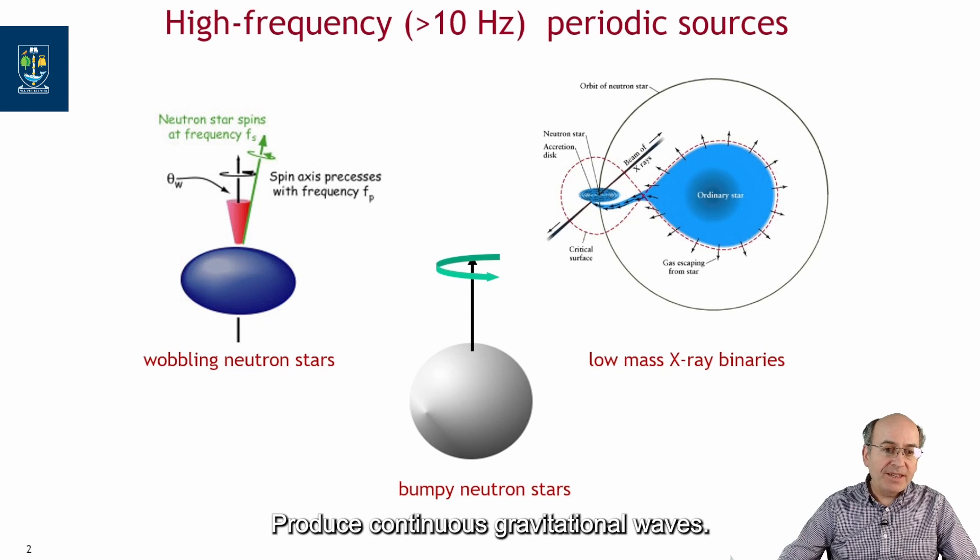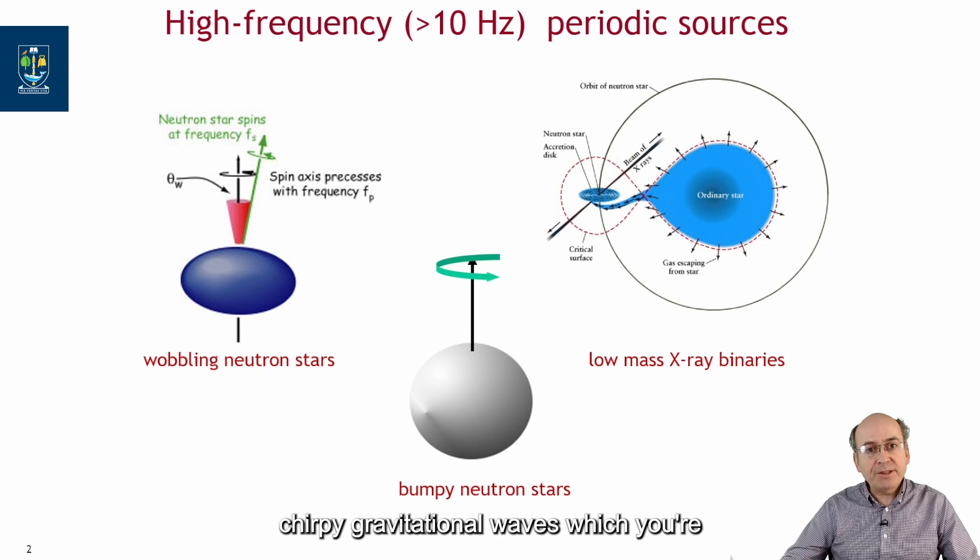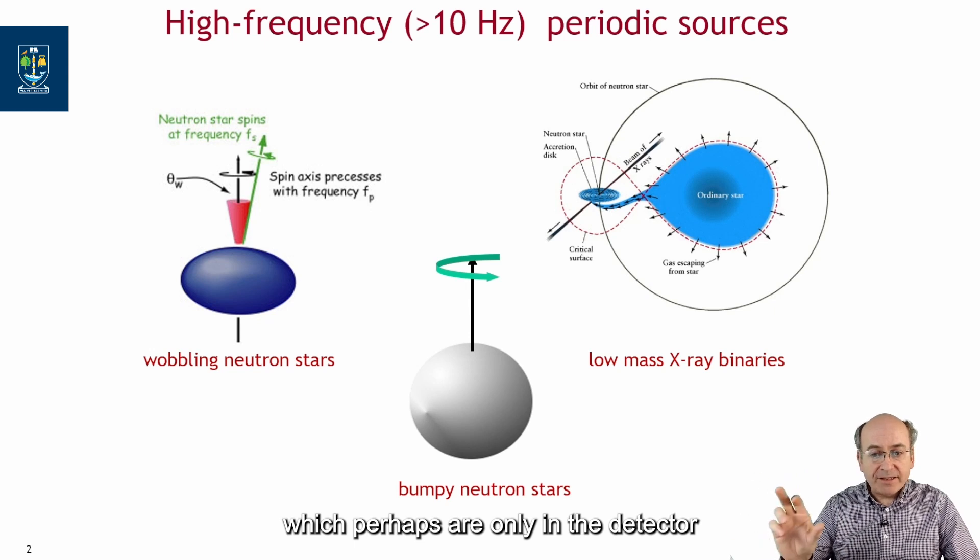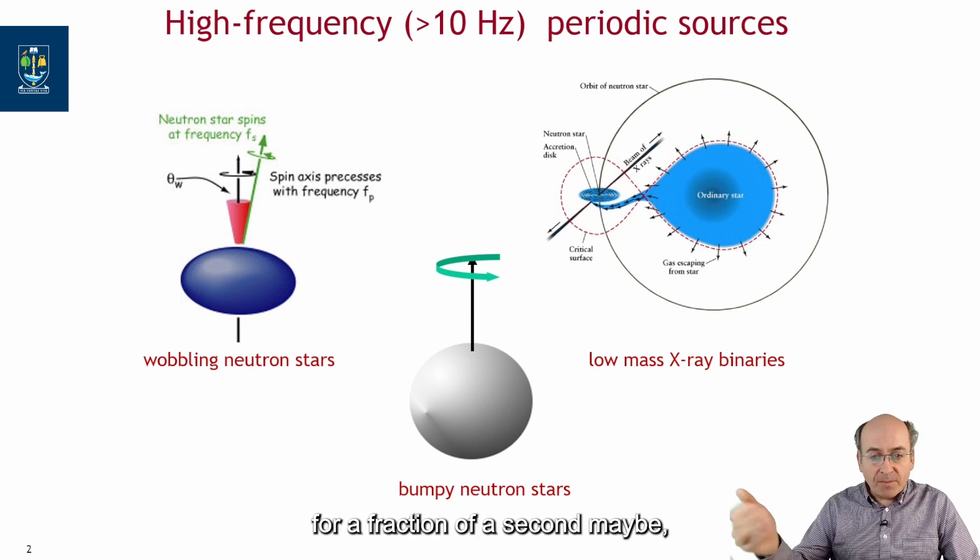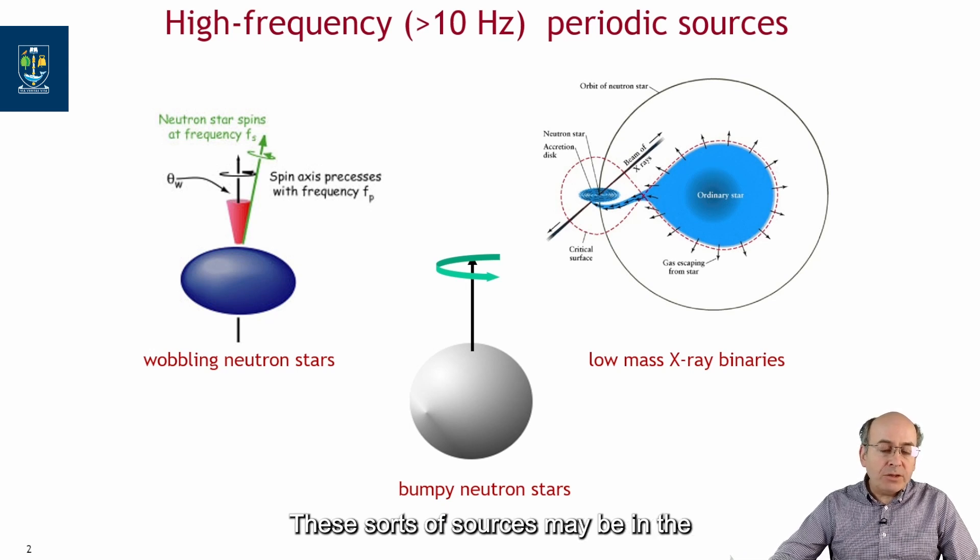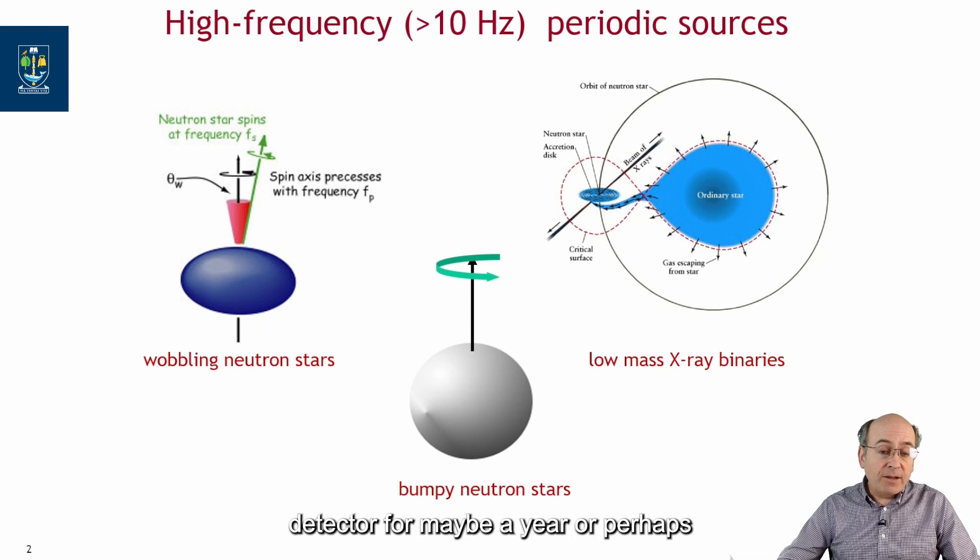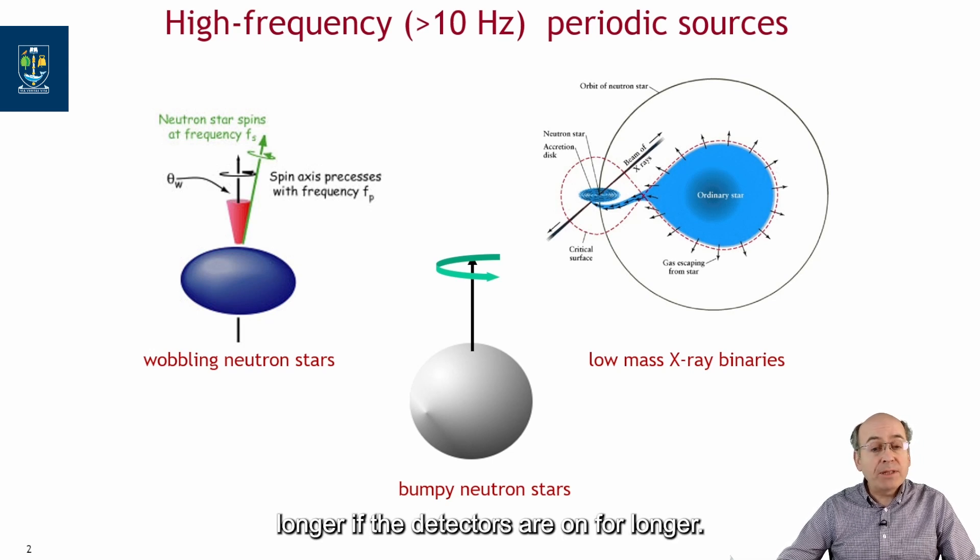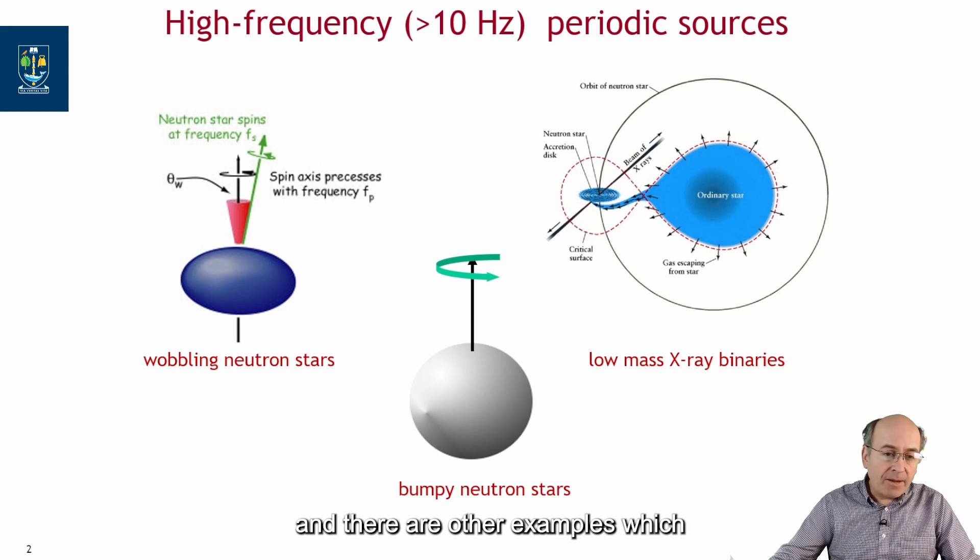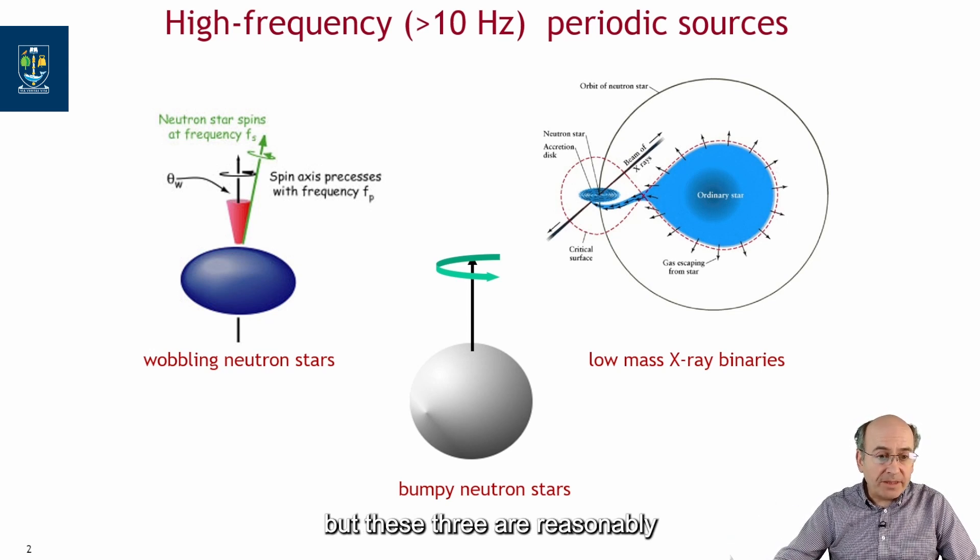What sort of things produce continuous gravitational waves? Rather than the in-spiraling, chirpy gravitational waves which you're used to hearing about in detectors, which perhaps only are in the detector for a fraction of a second or a few seconds, these sorts of sources may be in the detector for maybe a year or perhaps longer. Here are three examples and there are other examples which are more exotic, but these three are reasonably easy to understand.